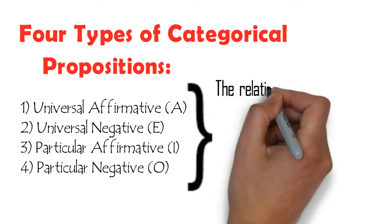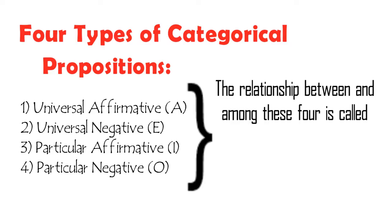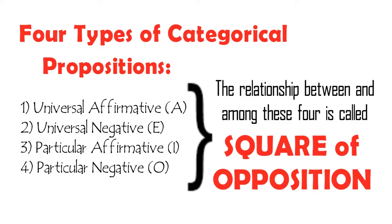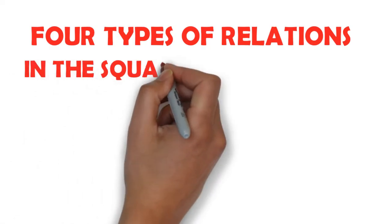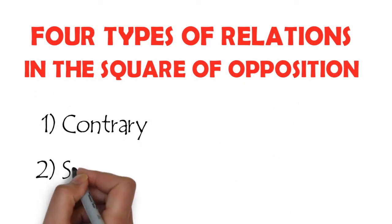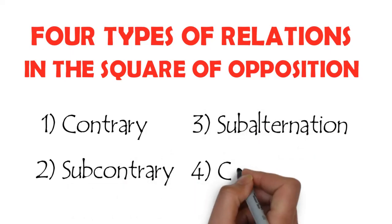Now, the relationship between and among these four types of categorical propositions is what logicians call the square of opposition. There are four types of relations in the square of opposition, namely: contrary, subcontrary, subalternation, and contradiction.